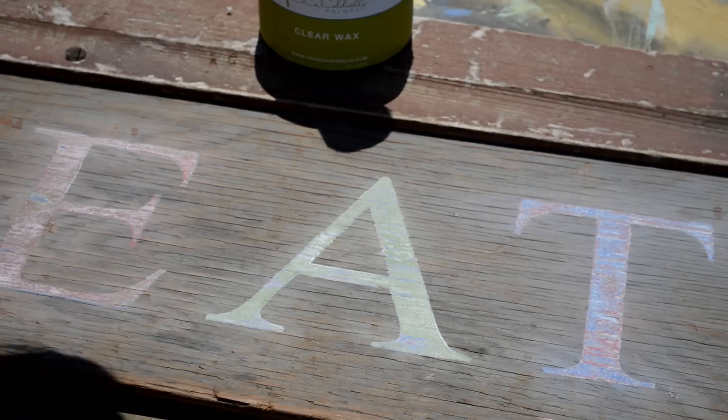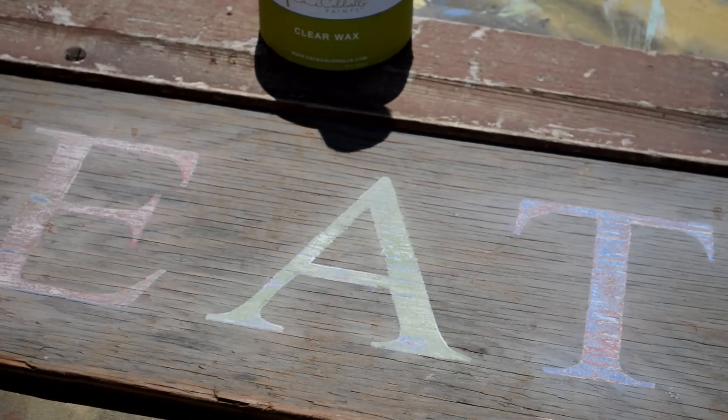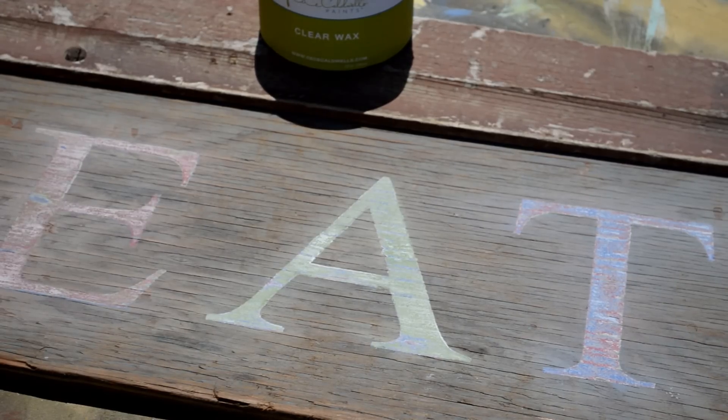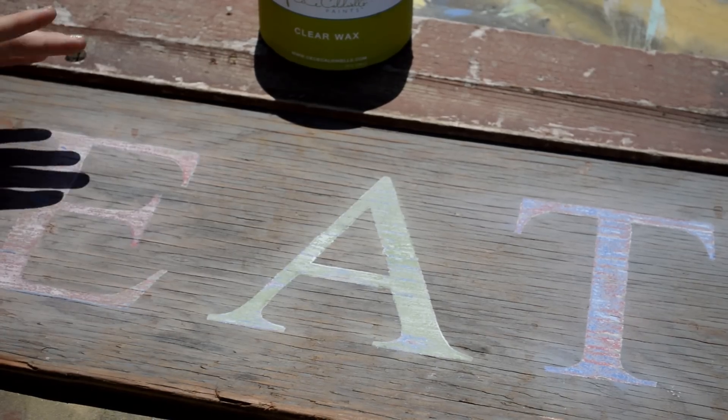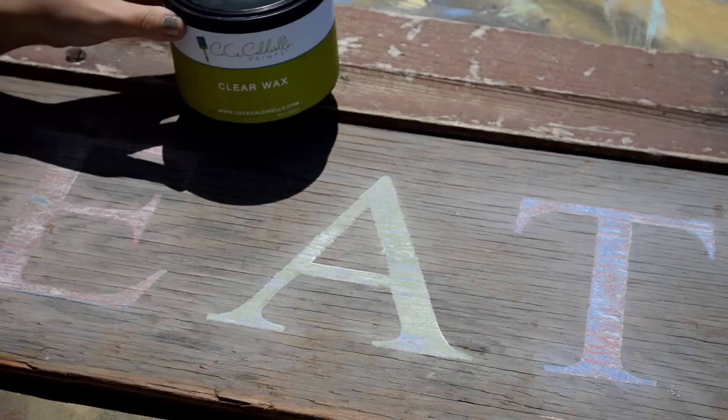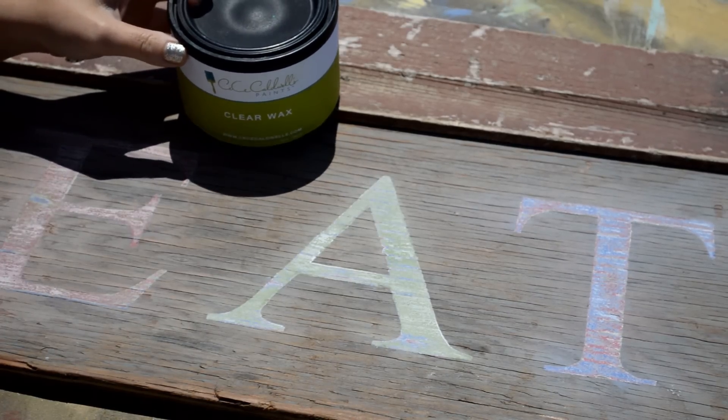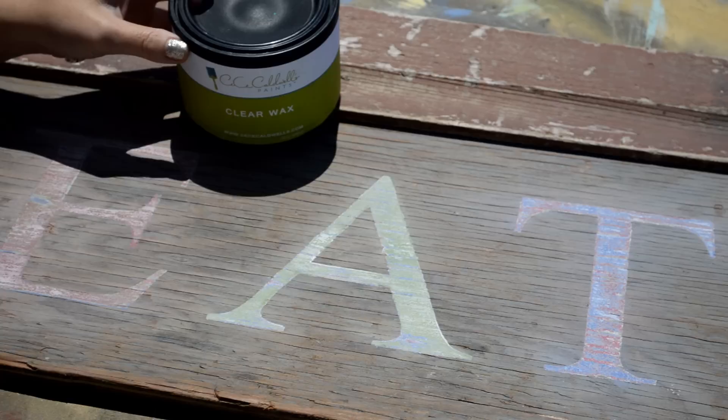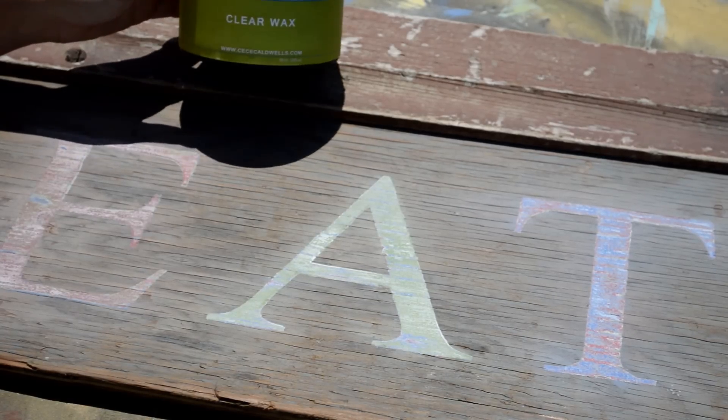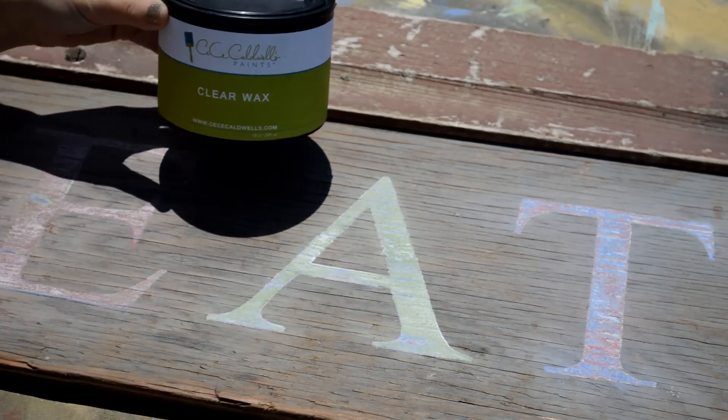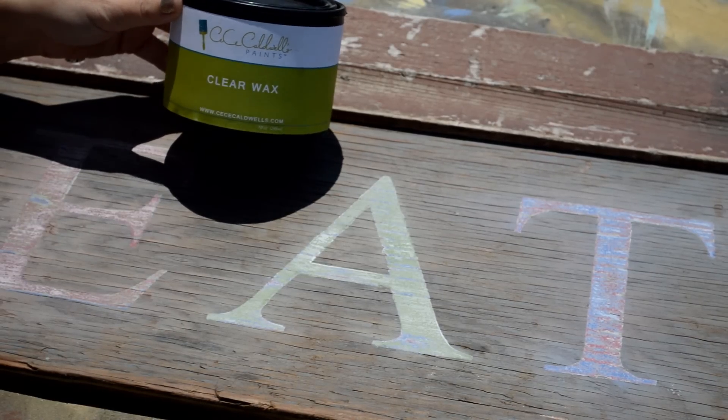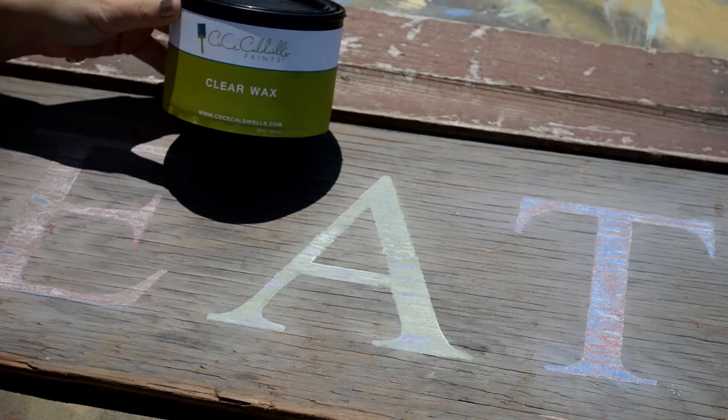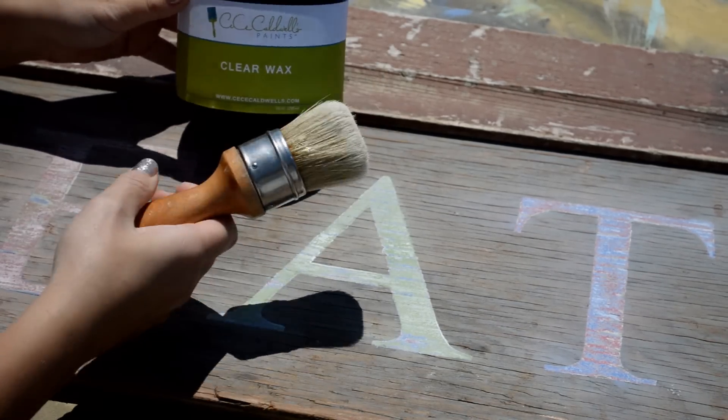Alright, so I've taken my sign outside, not for any particular reason, just because it's beautiful today. The last step of using chalk paint on any project is always going to be with a clear wax or a dark wax, or some kind of other sealant product like polyurethane. My product of choice is CC Caldwell Clear Wax. It is eco-friendly, it doesn't have any smell to it, it's just wonderful. And today I'm going to be using my wax brush.